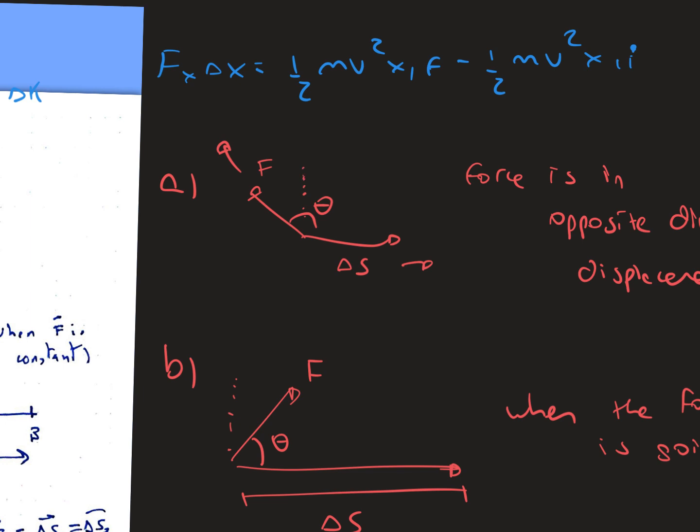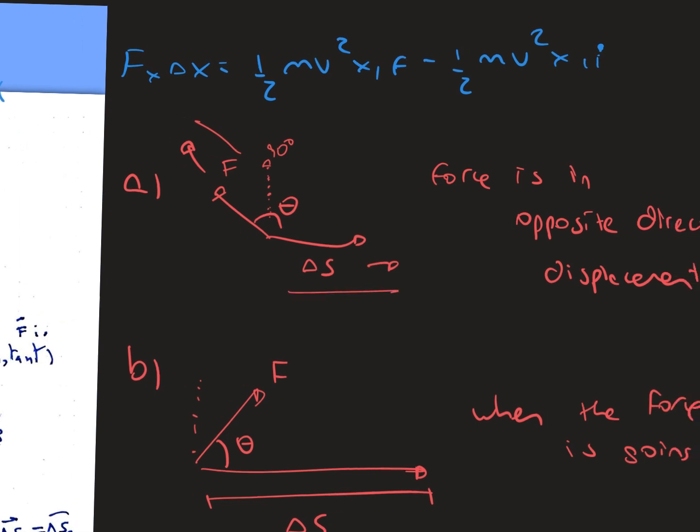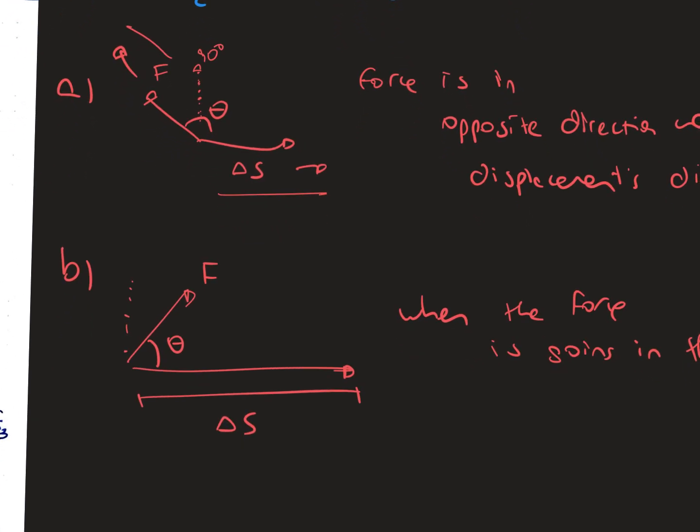So right here, the imaginary line means that equals 90 degrees. The force is going in that direction and the displacement, or delta s, is going to the opposite direction. That's when the work is negative.